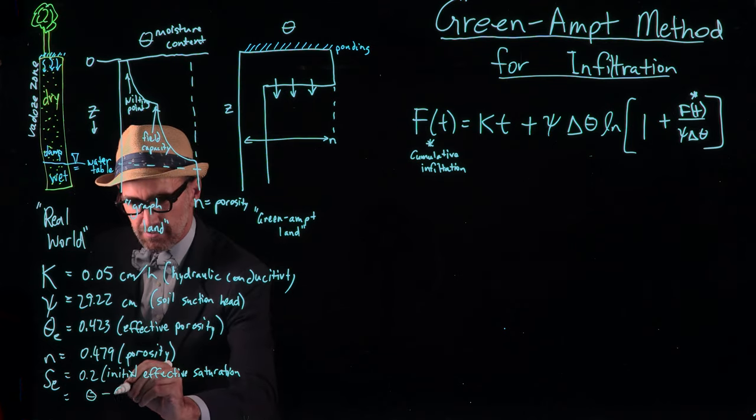On the next graph you'll see both the cumulative infiltration depth, which increases with time, and the infiltration rate, which starts high and decreases as capillary forces decrease. With that, you'll be able to solve for infiltration if you know the soil parameters and soil saturation. I encourage you to take a walk through Green-Ampt land, graph land, and the real world to solve these problems.